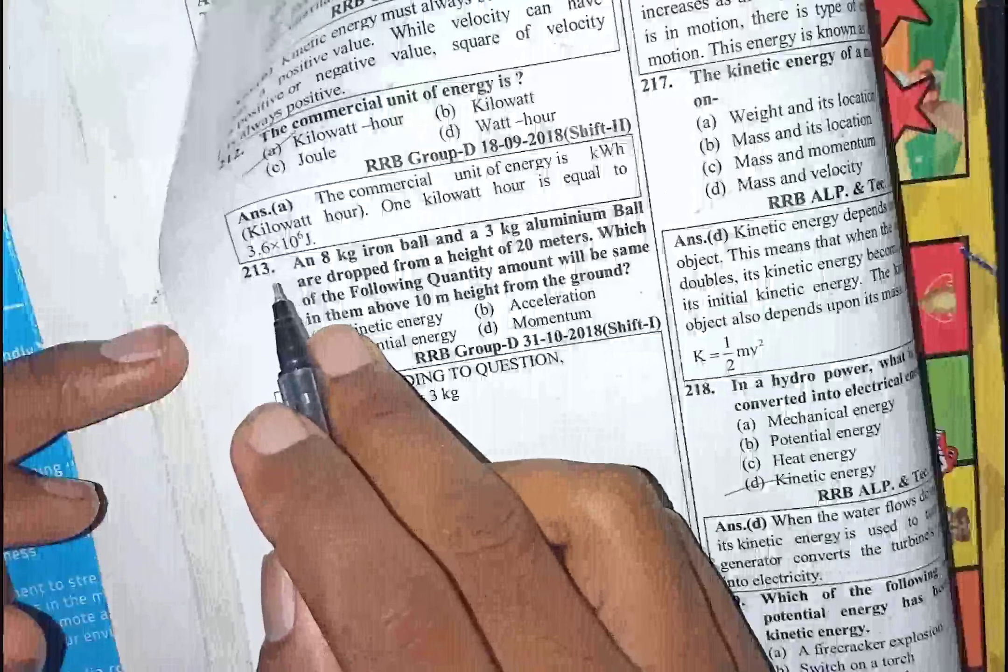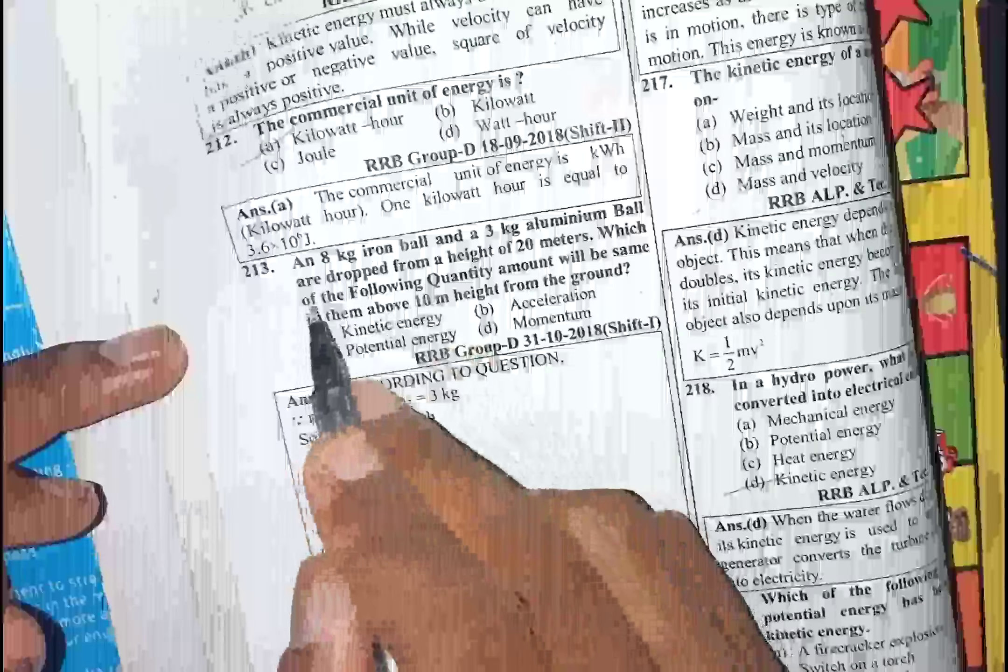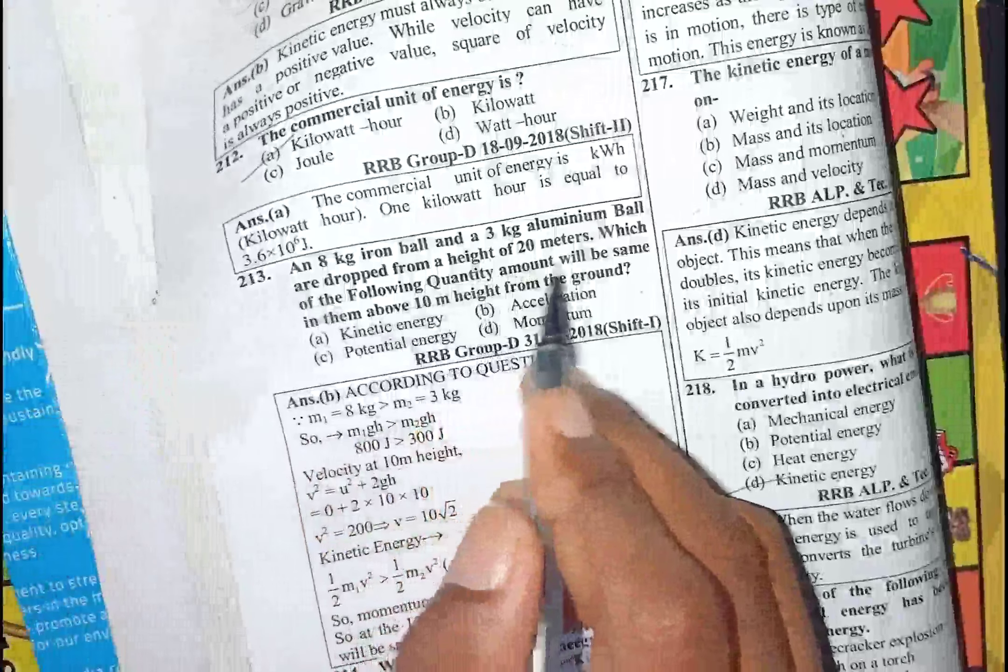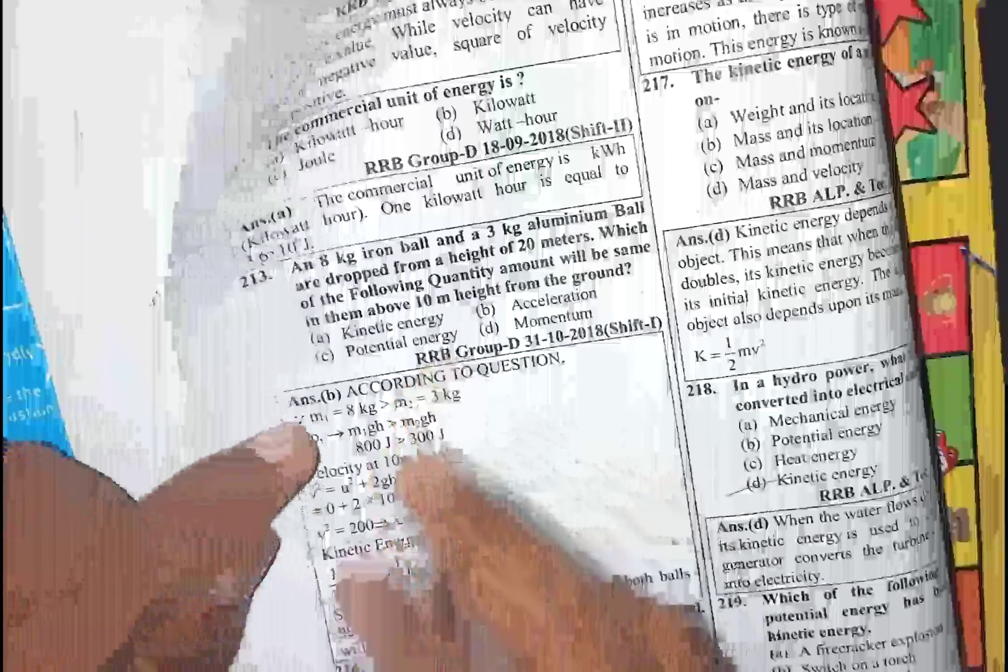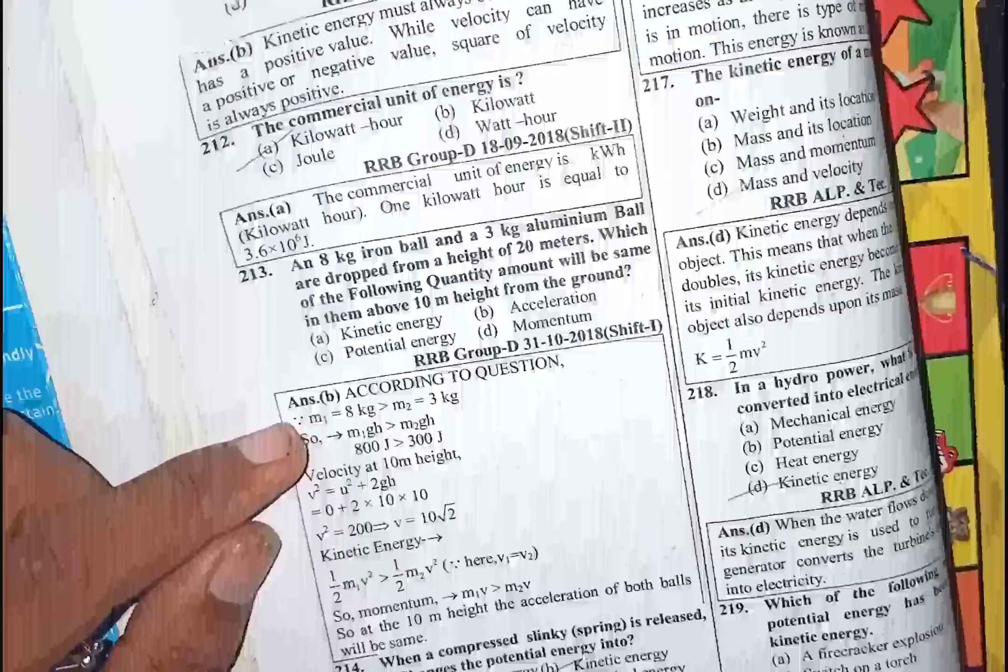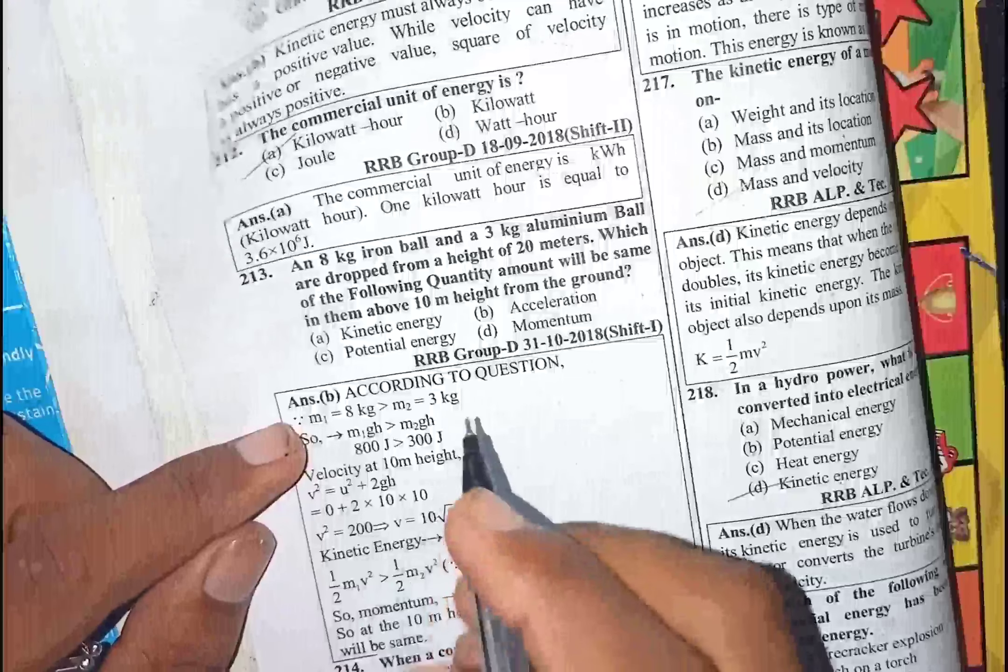Both the iron ball and aluminum ball are dropped from 20 meters. Which quantities will be the same? It depends on the quantity at 10 meters from the bottom.